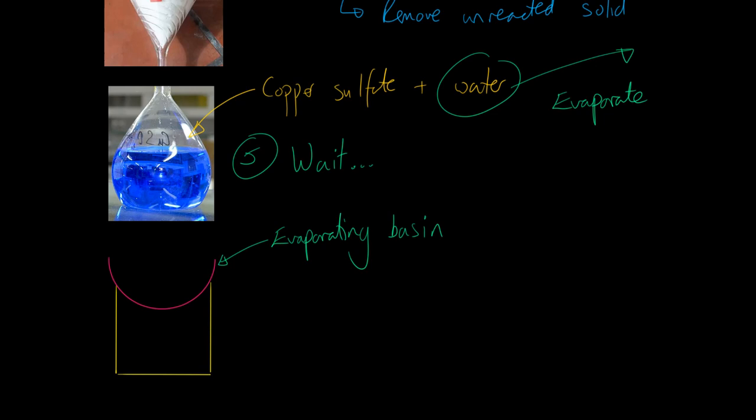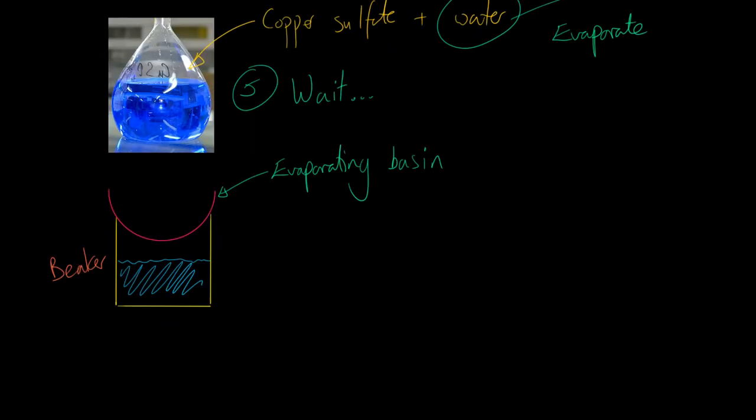Then you can put it over the top of a beaker, fill the beaker up with water, and then you can heat it strongly. And of course, put in your lovely copper sulfate solution in the evaporating basin. Why would you do that? Well, this water here at the bottom is going to start evaporating, making steam, and that will warm your solution and just speed the evaporation along.